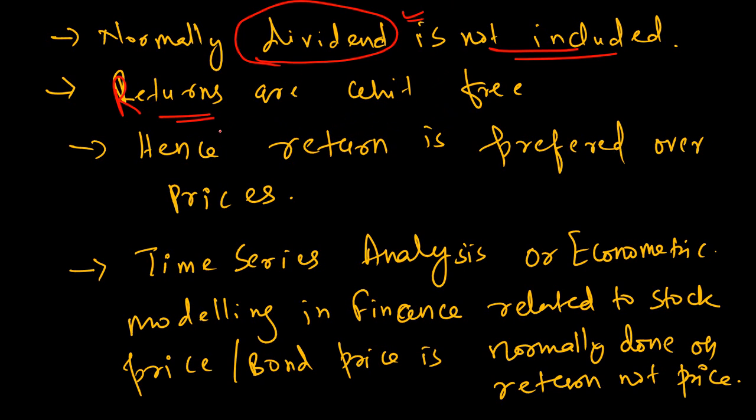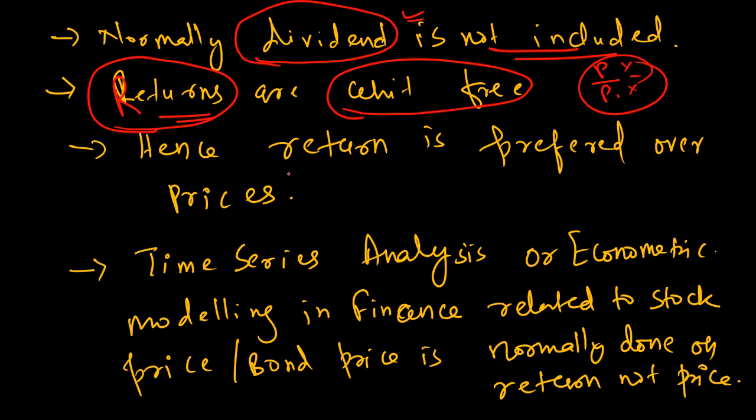One other good thing why people love to work with returns instead of stock price is that return is unit free. Because there is price in the numerator and then price in the denominator, the price units both cancel out and return is unitless. Hence people love to work with a unitless series instead of a series with units. That's why return is mostly used in financial research, not the price.